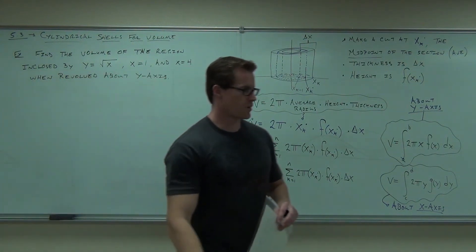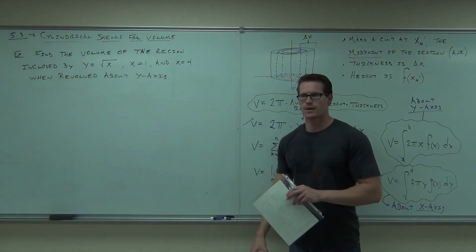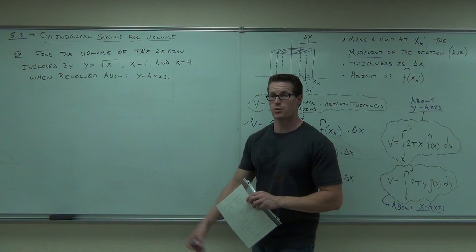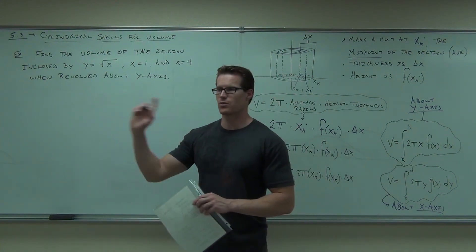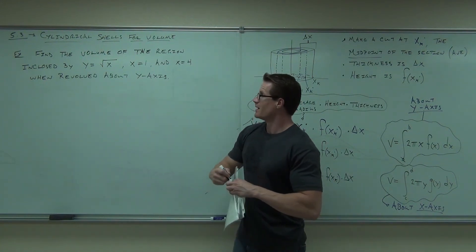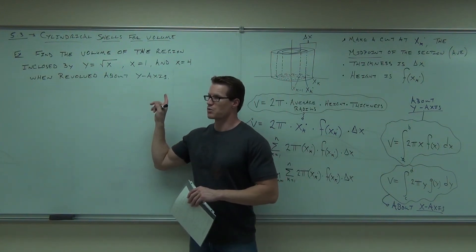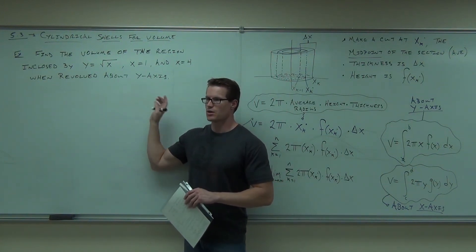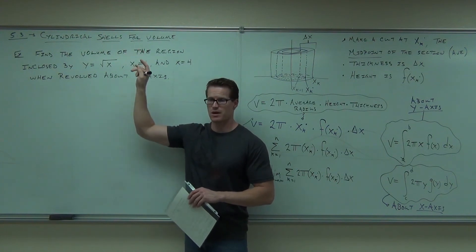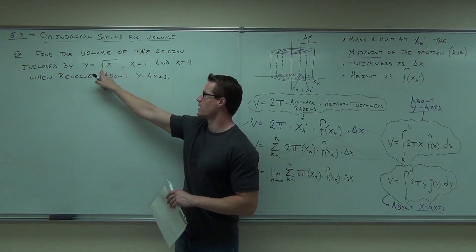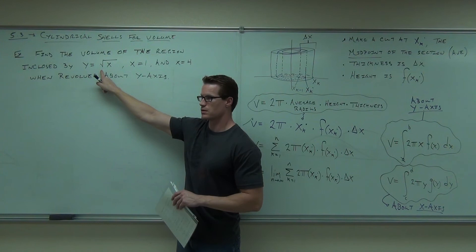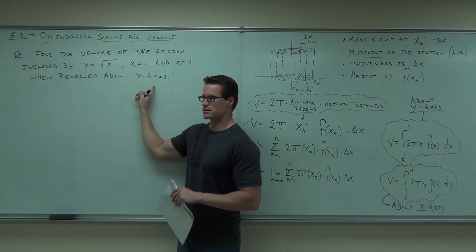Find the volume of the region enclosed by y equals the square root of x, x equals 1, x equals 4, which are vertical lines, revolved around the y-axis. First question I have for you. Since we're revolving around the y-axis with this method, cylindrical shells method, is this okay or not? Around the y-axis, okay or not?